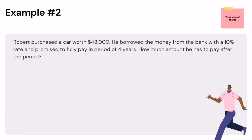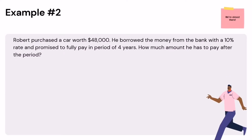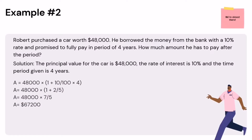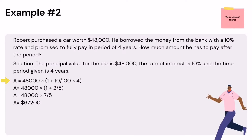Example 2: Robert purchased a car worth $48,000. He borrowed the money from the bank at 10% per annum for a period of 4 years. How much amount does he have to pay after the period? Given: principal is $48,000, rate is 10% (or 10/100), time is 4 years. Using the formula A = P(1 + RT): 48,000 × (1 + (10/100) × 4) = 48,000 × (1 + 2/5) = 48,000 × 7/5 = $67,200. Therefore, Robert has to pay $67,200.